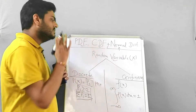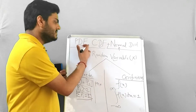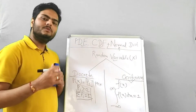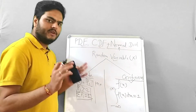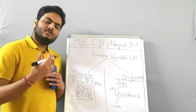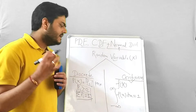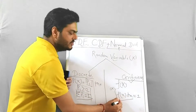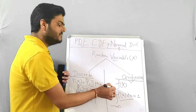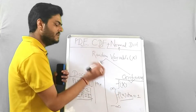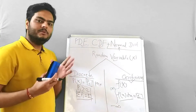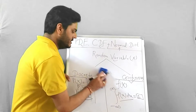Now, what is the probability density function? Probability density function comes in the context of continuous random variables. It is a function f(x) such that if you integrate f(x) dx from minus infinity to plus infinity, the result should be 1. This looks a little mathematical, so let me give you an example to make it clear.